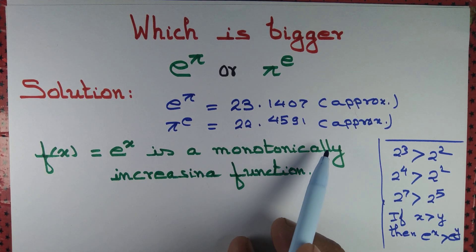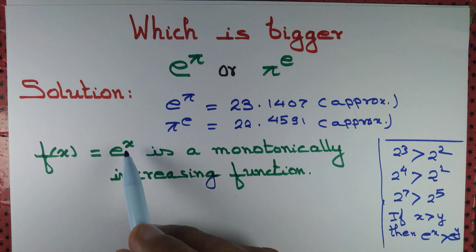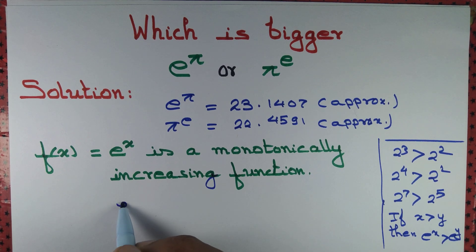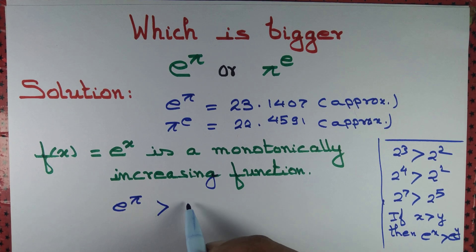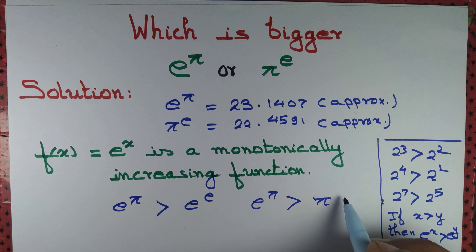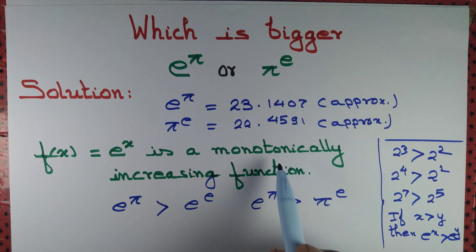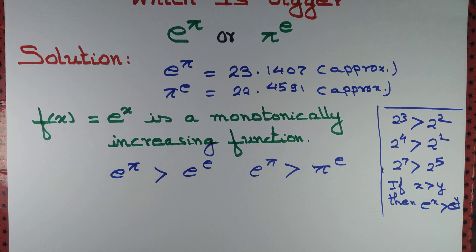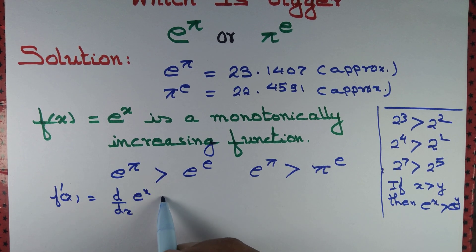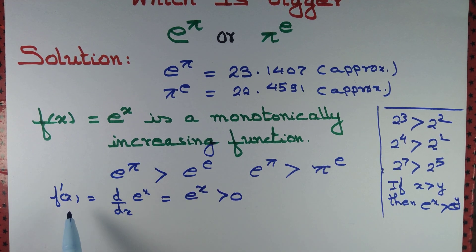What we mean is that e to the power x is a monotonically increasing function — in other words, if you increase the value of x, the value of e to the power x also increases. We can prove this using calculus: f'(x) = d/dx of e to the power x equals e to the power x, which is greater than zero. Since f'(x) > 0, we know that f(x) = e to the power x is a monotonically increasing function.